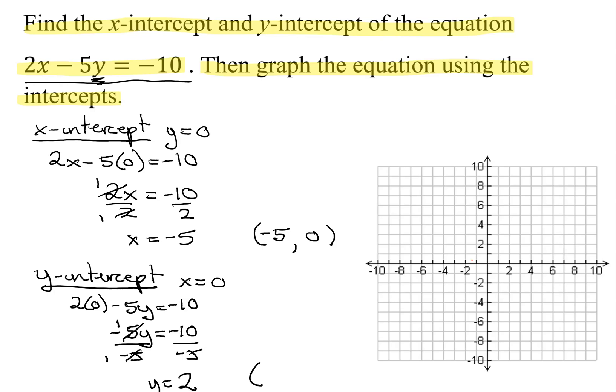So my y-intercept is the x-coordinate is 0, remember, and the y-coordinate is 2. So now I've found both my x-intercept and my y-intercept. So now I need to graph the equation.